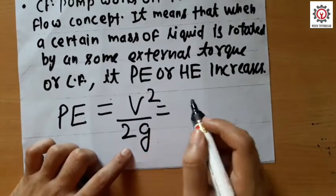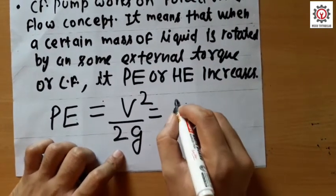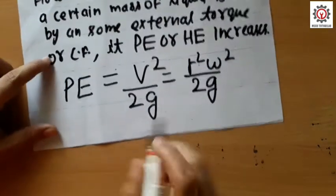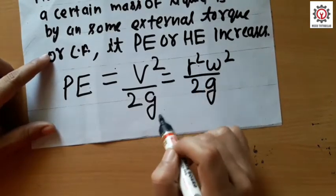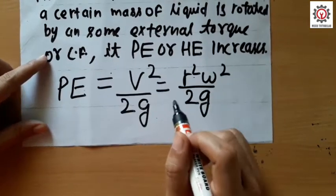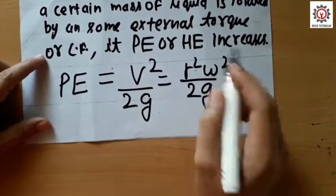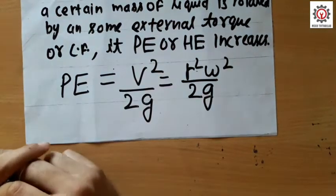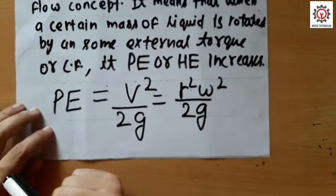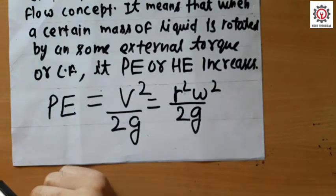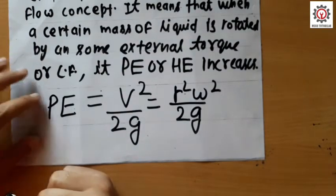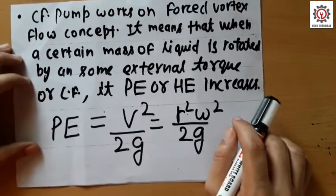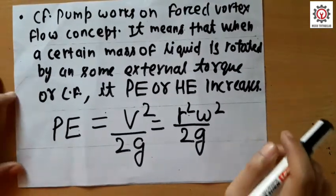Since V = rω, we have r²ω²/2g. Here we can see that the pressure energy is proportional to r²ω². So when r — the radius of the centrifugal pump — increases, or the size of the centrifugal pump increases, the pressure energy of the pump also increases.